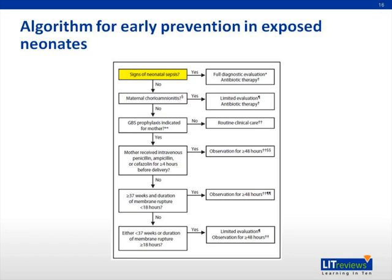Any newborn with signs of sepsis should receive a full diagnostic evaluation and antibiotic therapy pending results. The evaluation should include a blood culture, a CBC including white cell differential and platelet count, a chest radiograph if any abnormal respiratory signs are present, and a lumbar puncture if the newborn is stable enough and sepsis is suspected. Therapy should include antimicrobial agents active against GBS including intravenous ampicillin, as well as coverage for other organisms that might cause neonatal sepsis such as E. coli. Well-appearing newborns whose mothers had suspected chorioamnionitis should undergo a limited evaluation and receive antibiotic therapy pending culture results, including a blood culture and CBC; no chest radiograph or lumbar puncture is needed.